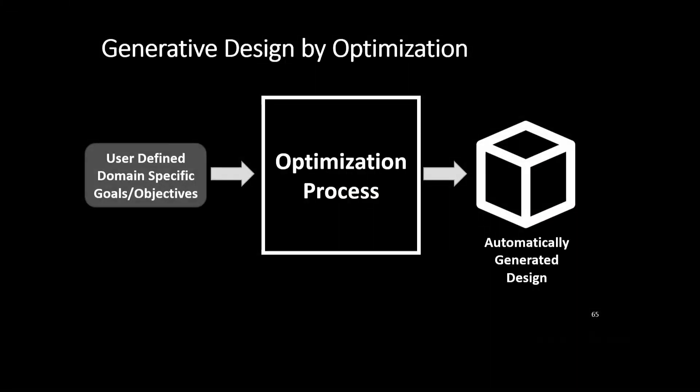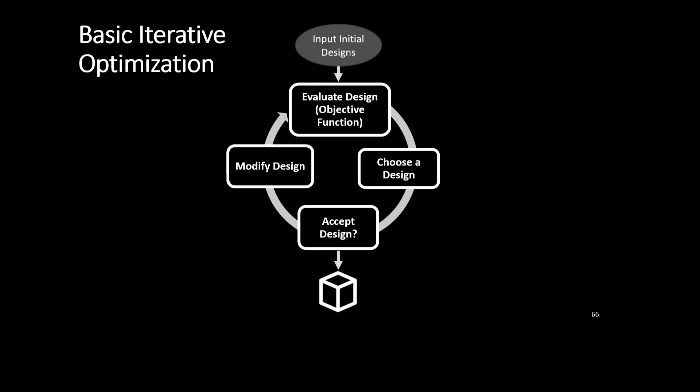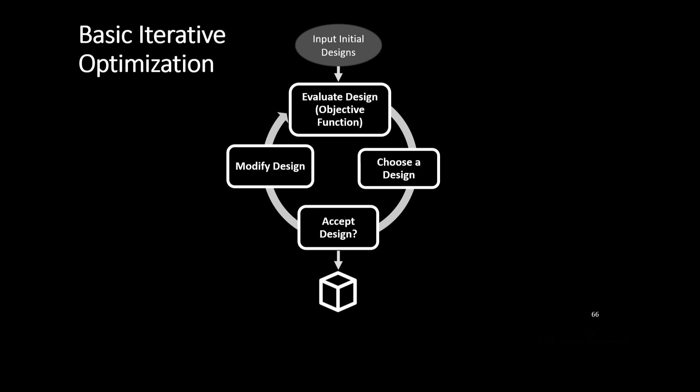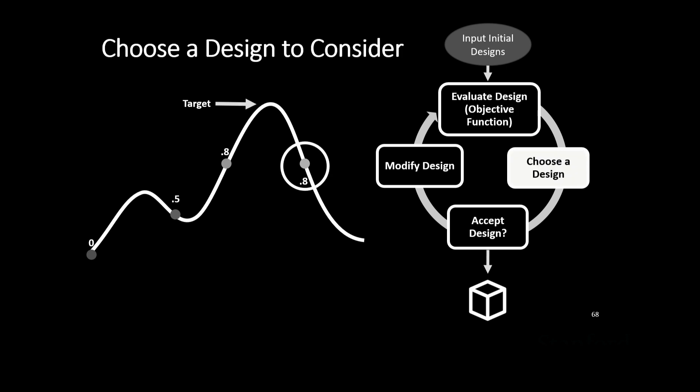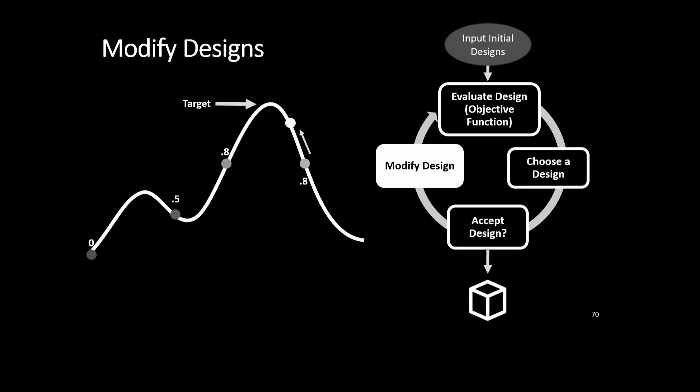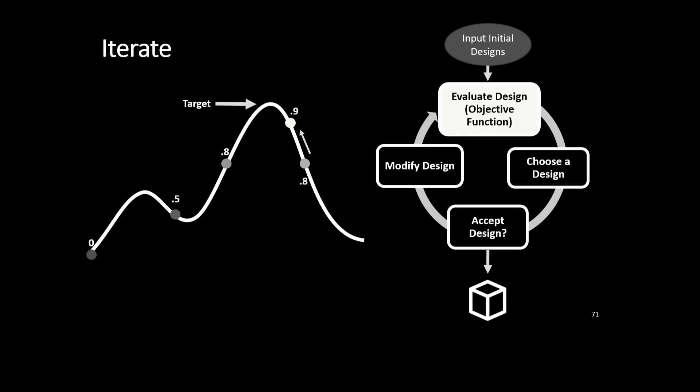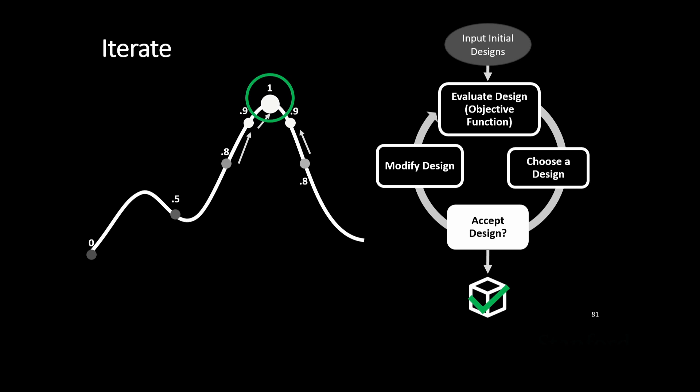We convert this into a generative design approach using an optimization process: the user inputs domain-defined goals such as those splint objectives, a black-box optimization process the orthogonal expert doesn't need to understand automatically generates a solution. When we looked at optimization and generative design toolkits in fabrication, they all follow a similar pattern: input initial designs, evaluate with an objective function, choose a design to examine further, consider whether to accept it, and if not, modify it and repeat — iterating until finding a design meeting acceptance criteria, ideally a local maxima or threshold score.